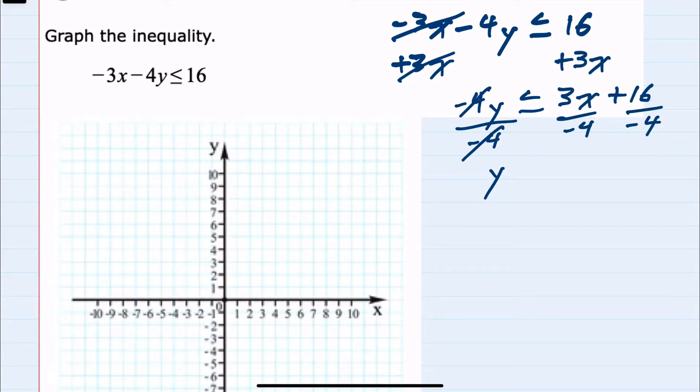Dividing by a negative in an inequality changes the direction of the inequality. This simplifies to -3/4x, and 16 divided by -4 is -4.